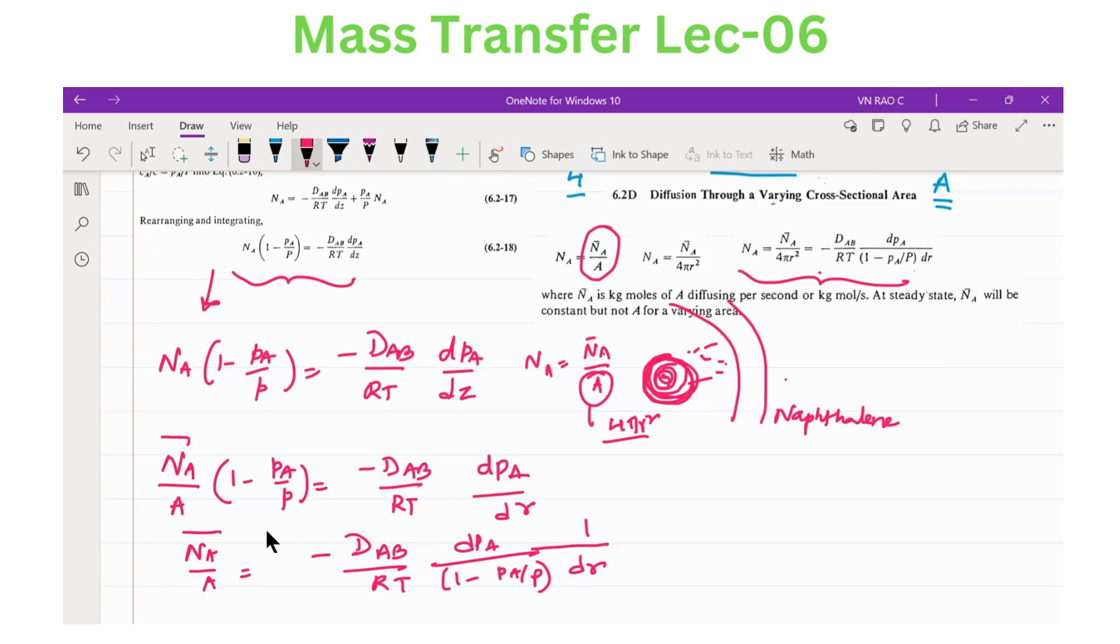NA bar by A equals 1 minus PA by 1 minus PA by P divided by DR. This A is replaced by 4 pi R square, area of the sphere. That means surface area of the sphere. I think you are able to get what I am trying to reach out.